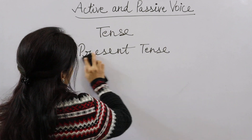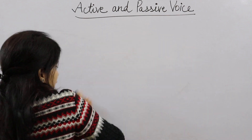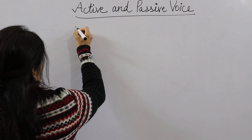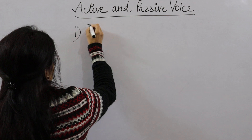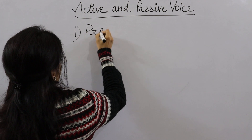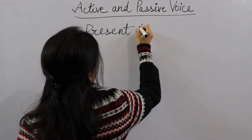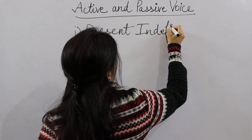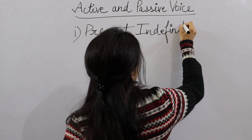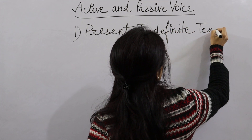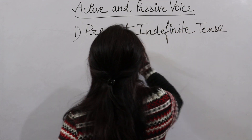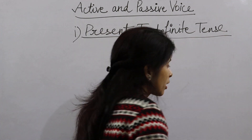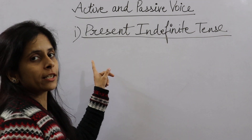First of all, present tense — the first type is present indefinite tense. How do you make active and passive in present indefinite tense? First of all, here is the formula.